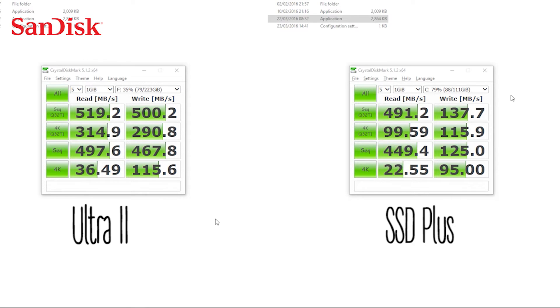As you can see the Ultra 2 is clearly faster. There is a significant difference between the two. Especially considering that the Ultra 2 SSD is just 1500 rupees more than the SSD Plus.